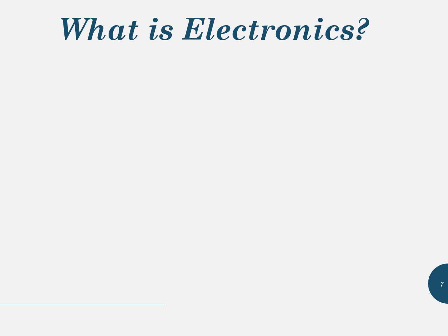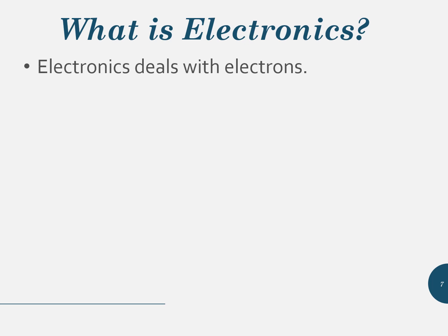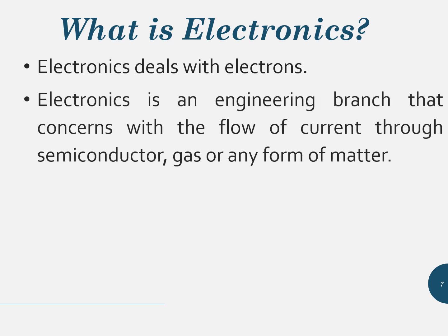Electronics is an applied form of science that deals with electrons. Technically, electronics is an engineering branch that concerns itself with the flow of current through a semiconductor, gas, or any form of matter. Now, what are the applications of electronics?